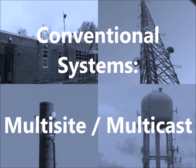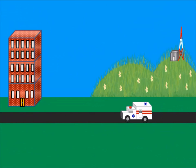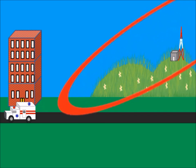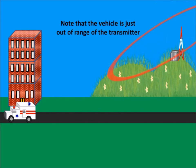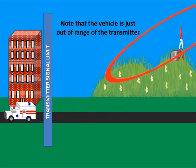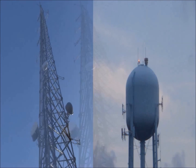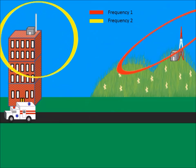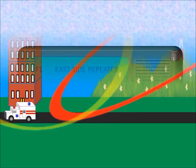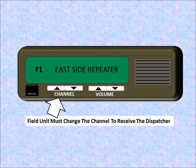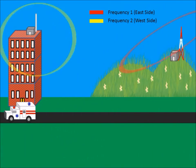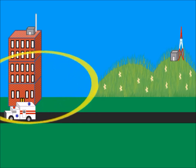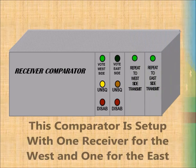Conventional Systems Multi-Site Multi-Cast. What if a unit is operating within its service area, perhaps using a system with voting receivers, but cannot reach a dispatcher due to the distance from the base station? The answer may be to use multiple sites and operate in a multi-cast mode. This requires another base station at another location and another frequency that will provide coverage within the area not covered by the other transmitter. This requires field units to understand their operational area and know when to change channels.